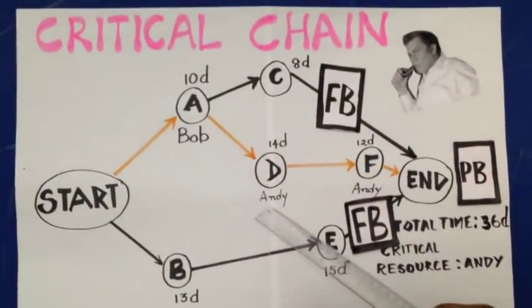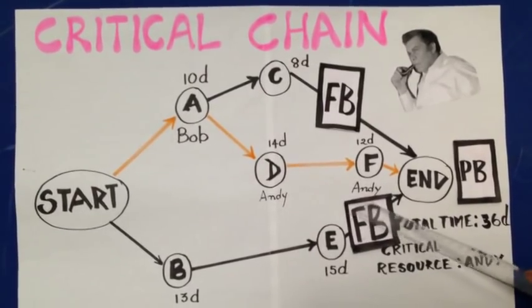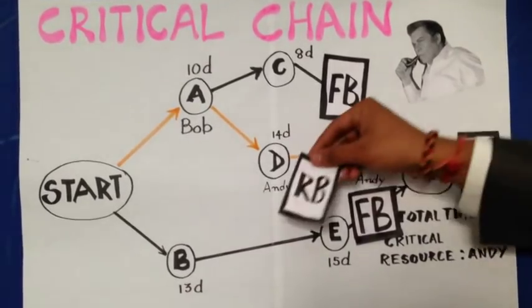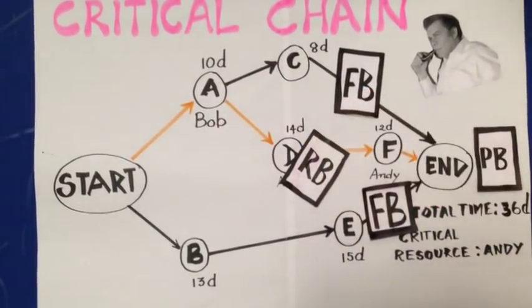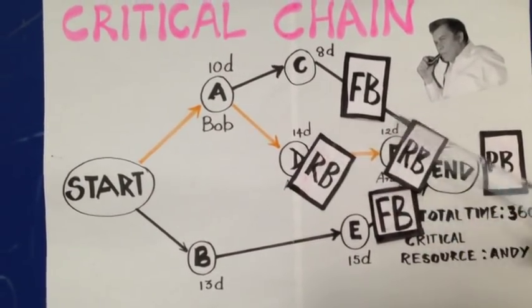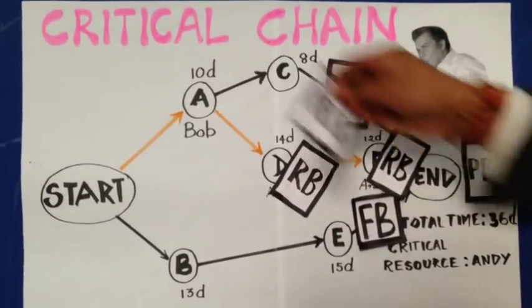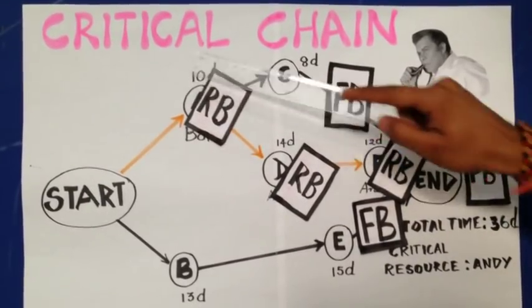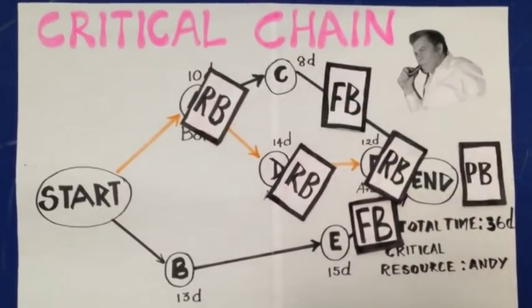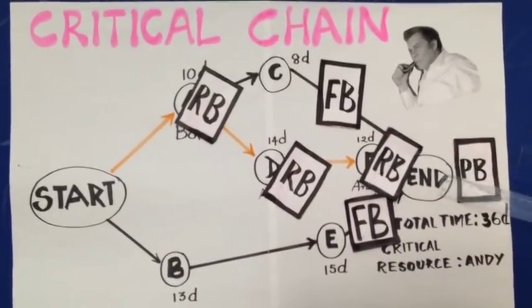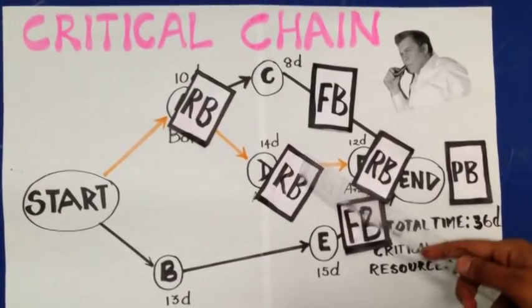The third one is the resource buffer. Time buffers are inserted where scarce resources are needed for an activity. Resource time buffers come in at least two forms. One: a time buffer attached to a critical resource, which will preserve the relay race. Two: a time buffer added to activities preceding the work of a scarce resource. This kind of buffer protects against resource bottlenecks by increasing the likelihood that the preceding activity will be completed when the resource is available.